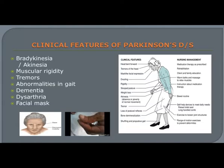Patients experience bradykinesia or akinesia — they are unable to do simple tasks such as picking something up or getting out of a chair. Muscular rigidity is also seen, defined as inability of muscles to relax; muscles become so tense and stiff that they cause sharp pain when moving. Examples include difficulty eating and chewing.